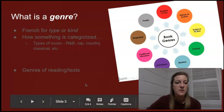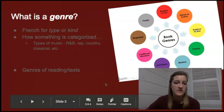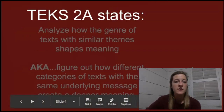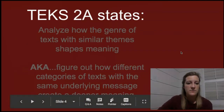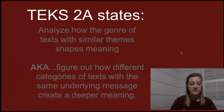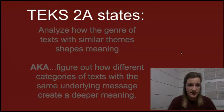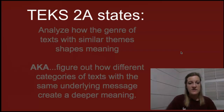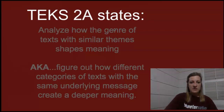Think of genre as categories or sections — types of music, types of reading, types of clothing. Genre is how something is categorized. Looking back at this standard, we're trying to learn how to analyze how the genre of a text shapes meaning — when you have two texts from the same genre, they're going to have similar themes, and how that shapes meaning.